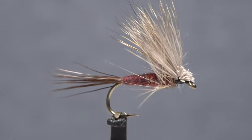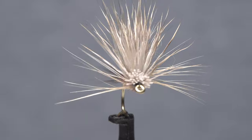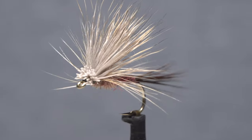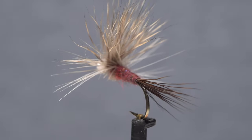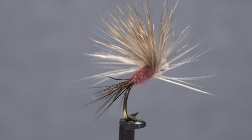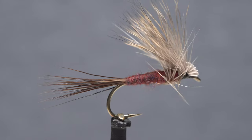This is an Isonychia flavored Harrop's hair wing. Think of a Harrop's hair wing as a style of fly, not just an individual pattern. Simply by changing the colors of materials and hook sizes, you can make any number of mayfly imitations.